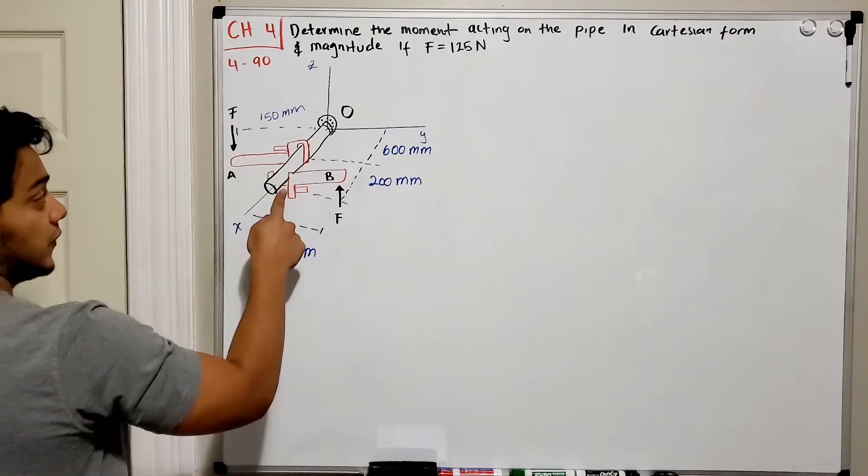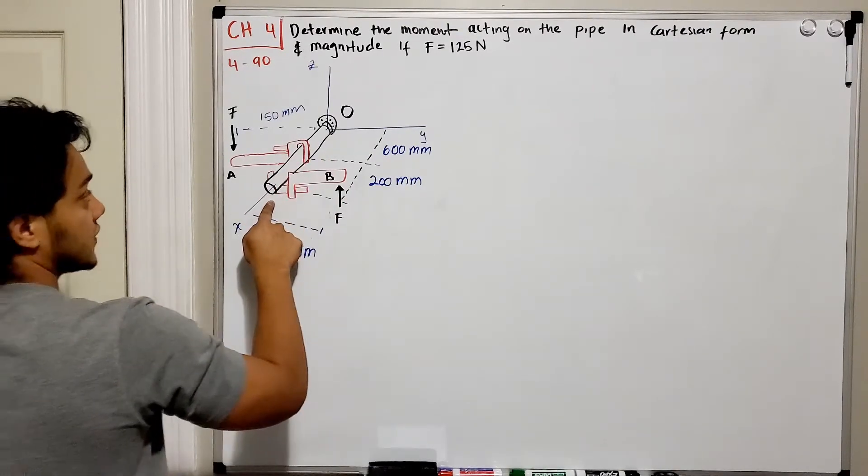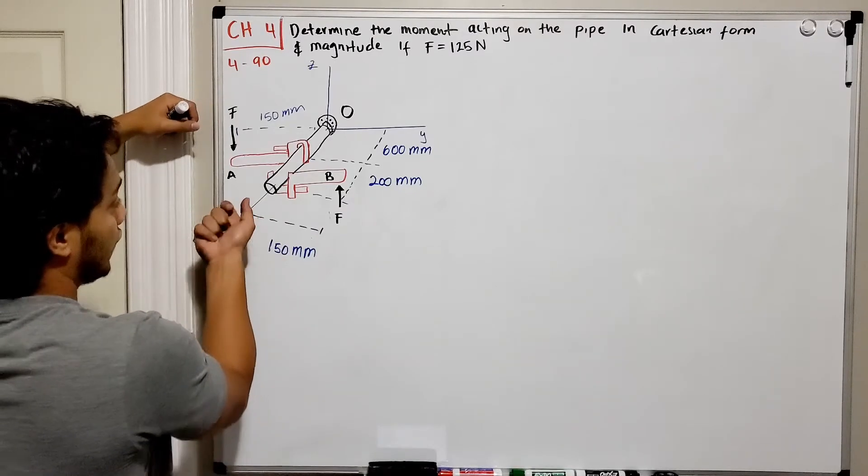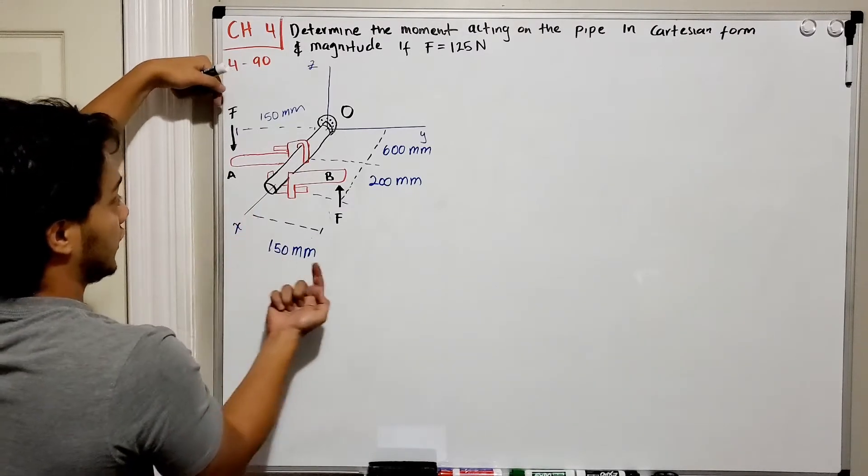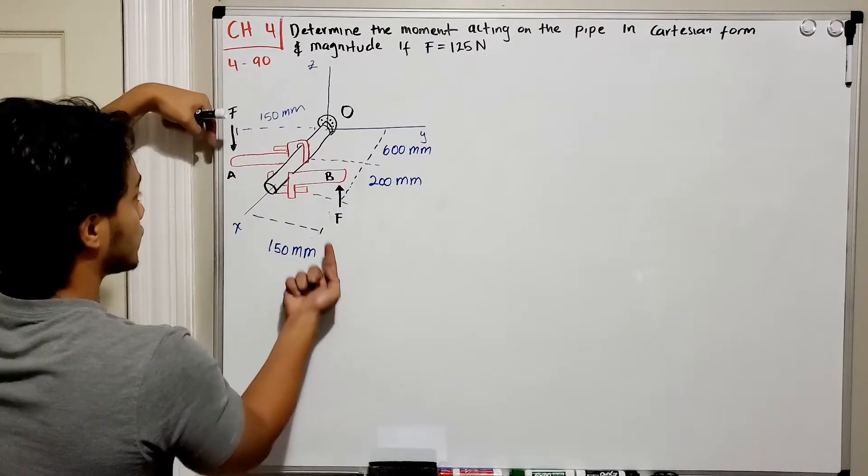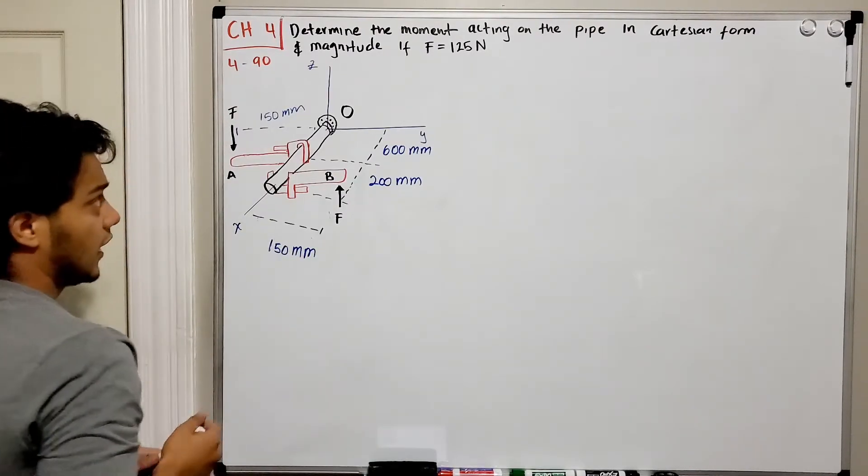So we got our pipe just lying on our x-axis and we have these two wrenches that are connected to our pipe and in each one of those we have two equal and opposite forces.